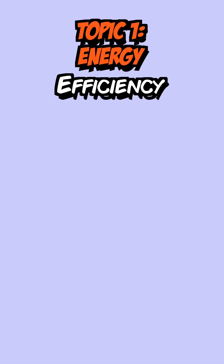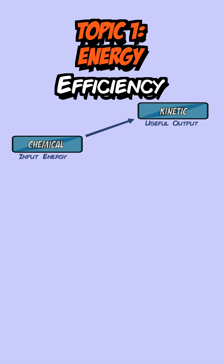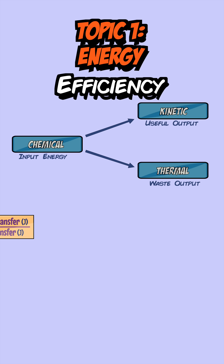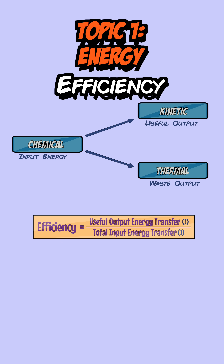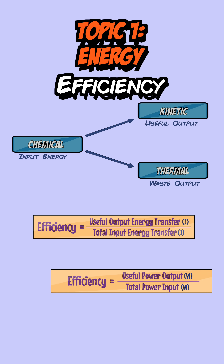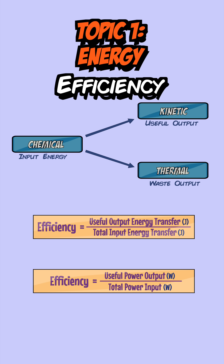Next, let's talk about efficiency. When an energy transfer takes place in an object, some of the energy is usefully transferred and some is wasted or dissipated. Efficiency is defined as the useful energy given out by an object over the total energy put into the object, and you can also write it in terms of power as useful power output over total power input.